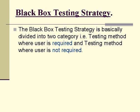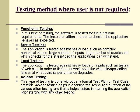Black box testing strategy is basically divided into two categories: testing methods where the user is required, and testing methods where the user is not required. Testing methods where the user is not required include functional testing. In this type of testing, the software is tested for functional requirements, and tests are written to check if the application behaves as expected.